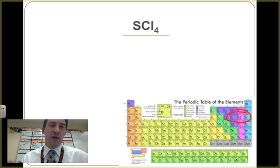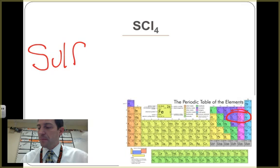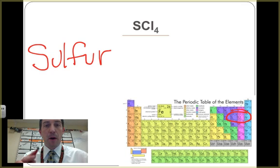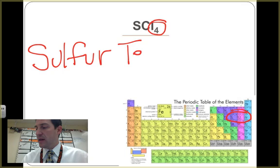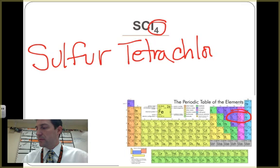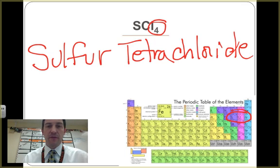Now that we know it's a covalent bond, we know we have to name it differently. Sulfur, and we don't have to put mono in front of the first one, because that's one of the rules of naming covalent compounds. But, the chlorine, we've got 4 of them. We need to say how many we have. Tetra is the prefix for 4. Tetrachloride. We have sulfur tetrachloride.